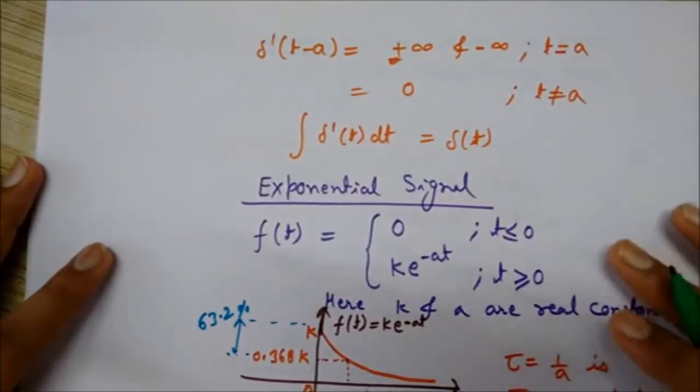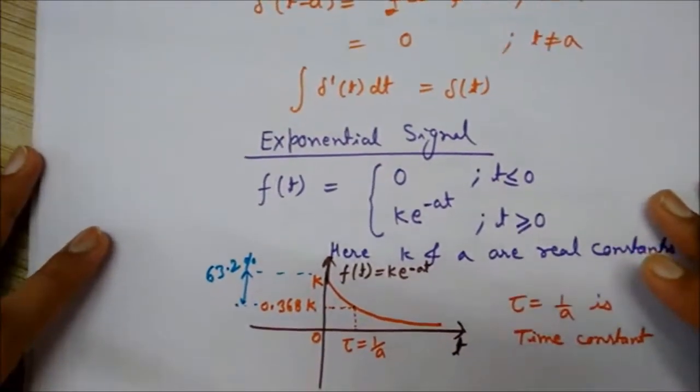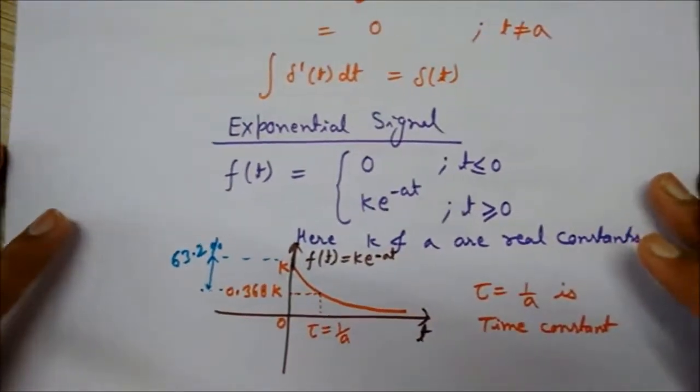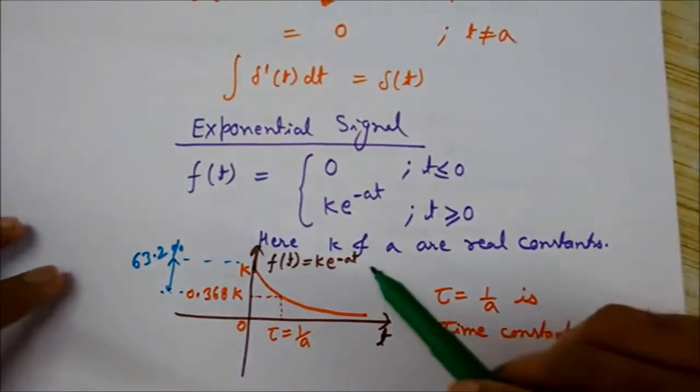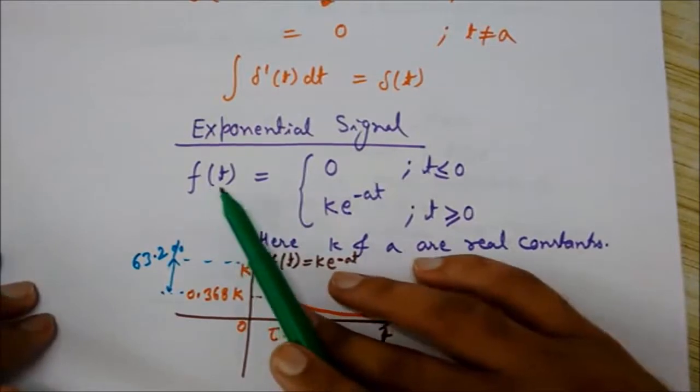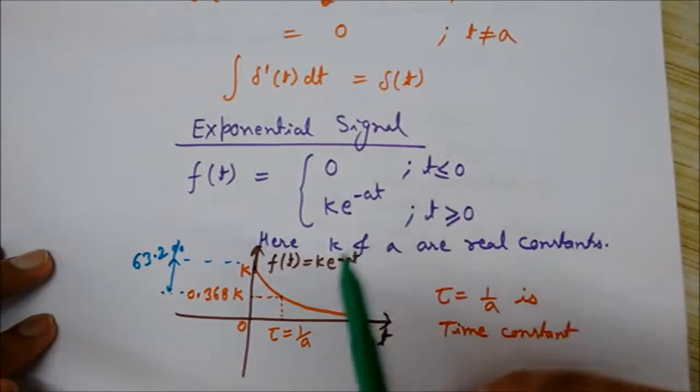Now we will discuss another kind of signal called the exponential signal, a very important signal. The exponential signal can be defined as f(t) equals 0 for t less than or equal to 0, and its value is